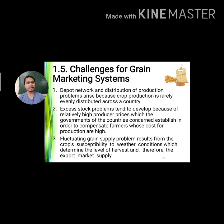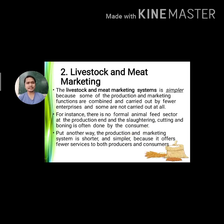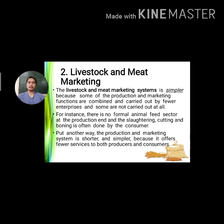The second type is livestock and meat marketing. This is simpler because some production and marketing functions are combined and carried out by fewer enterprises, and some are not carried out at all. For instance, there is no formal animal feed sector at the production end, and slaughtering, cutting, and boning are often done by the consumer. The production and marketing system is shorter and simpler because it offers fewer services to both producers and consumers.